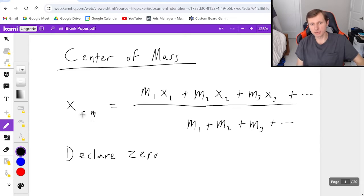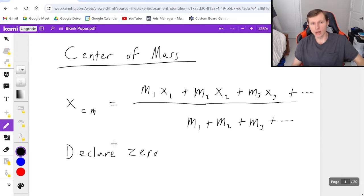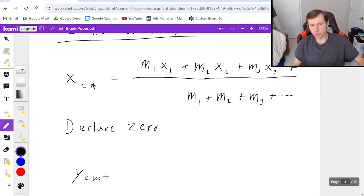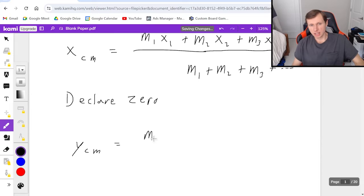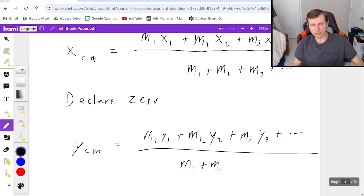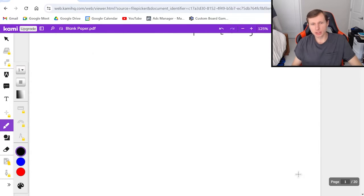The other thing I want to say is that this is for the x center of mass. We can also have a y center of mass if it's two dimensions. And this equation is very similar. It's just m1y1 plus m2y2 plus m3y3 plus dot dot dot divided by the sum of all the masses. So that's everything I have to say. Now let's look at a couple example problems with center of mass.